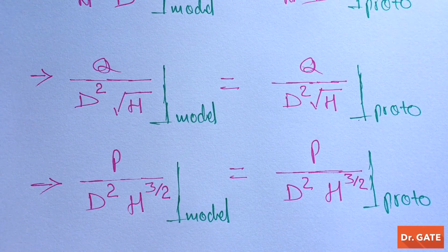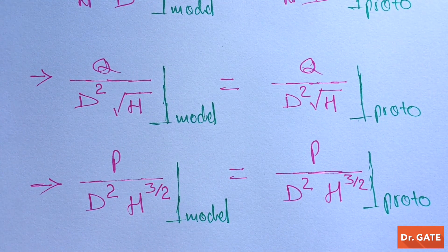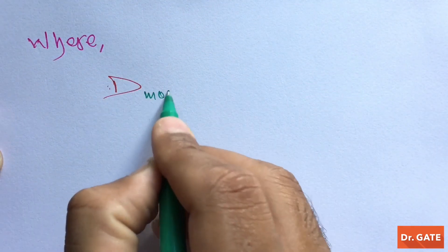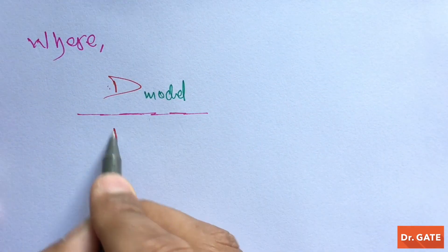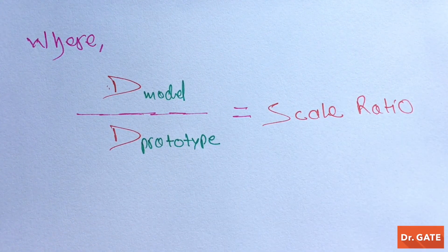One should note that D here stands for diameter. As already discussed, the diameter of the model divided by the diameter of the prototype is the scale ratio, which is generally less than 1, but it may be greater than 1 as well.